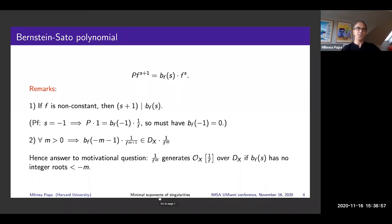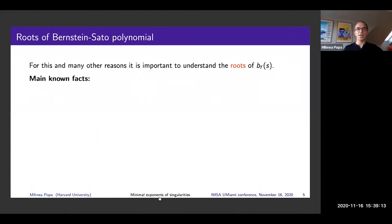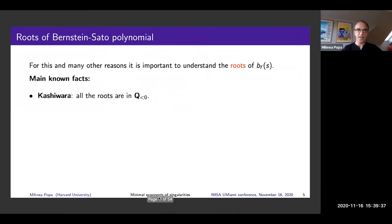This is one of the many reasons why it's very interesting to be able to say something about the roots of the Bernstein-Sato polynomial. People are aware that these roots are important, well-known invariants of the singularities of f. The first and most important result is Kashiwara's theorem from the 1970s: all roots of the Bernstein-Sato polynomial are negative rational numbers. This is proved using resolution of singularities, and we'll see an improvement of this result shortly.